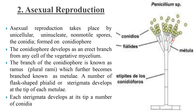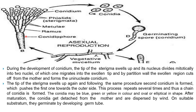A number of flask-shaped phialides or sterigmata develop at the tip of each metula. Each sterigma develops at its tip a number of conidia. During the development of a conidium, the tip of the sterigma swells up and its nucleus divides mitotically into two nuclei, of which one migrates into the swollen tip.